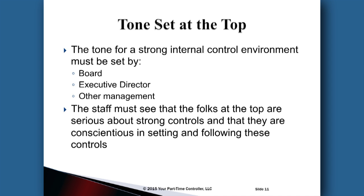Very important: the tone has to be set at the top — the board, the executive director, and other management. The staff has to see that the folks at the top are serious about strong internal controls, and that they are conscientious not only in setting strong controls but also in following them. For example, if the executive director insists that all expense reports submitted by staff have properly documented receipts, but then submits his or her own expense reports without receipts, that shows a lack of conscientiousness. The staff knows whether the people at the top are serious about internal controls.